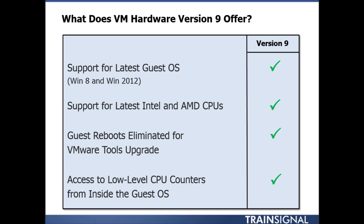VMware calls these monster virtual machines. I honestly don't know anyone who has had the need to create a virtual machine that large, but it is a great statement on the scalability of VMware vSphere. VM Hardware version 9 also supports the latest guest operating systems — Windows 8 and Windows Server 2012 — and the latest Intel and AMD CPUs. Once you upgrade to VM Hardware version 9 and install the new VMware Tools, VMware says future versions won't require a guest OS reboot for tools installations.